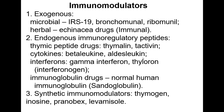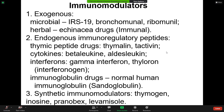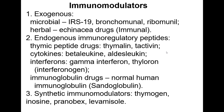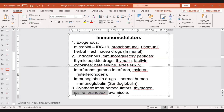Immunomodulators include preparations of immunoglobulins such as normal human immunoglobulin and sandoglobulin. In COVID-19, in severe cases, the plasma of treated patients can be used to help patients with severe COVID pneumonia. Exogenous vaccines can also be used to treat COVID-19. Synthetic immunomodulators include stymogen and levamisole. Older synthetic drugs are largely no longer used.